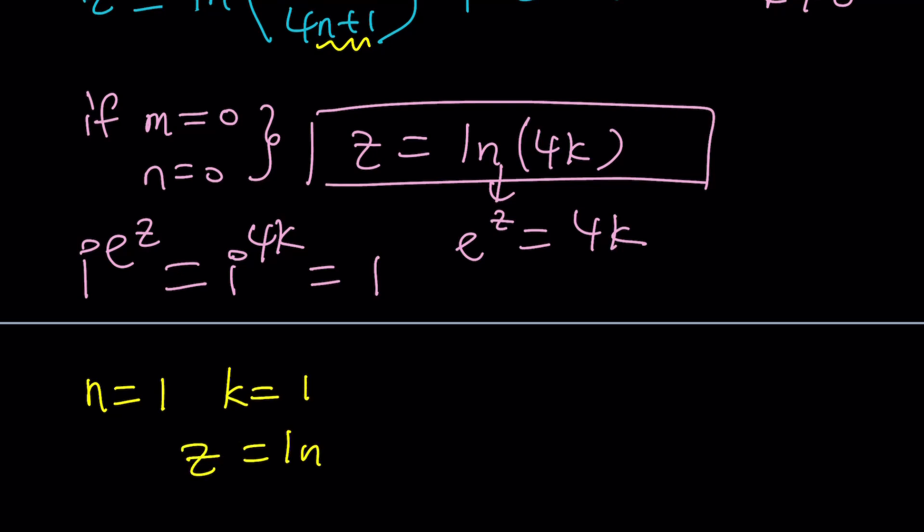And again, for simplicity's sake, let's just take m equals 0 because it just eliminates the imaginary part, right? So that's no big deal. Well, maybe.